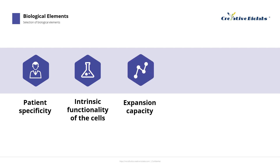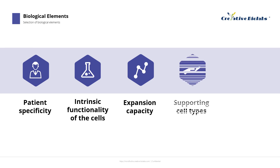Expansion capacity is vital as well, referring to the ability of cells to proliferate in vitro, directly related to the number of cells available for seeding into an OOC device. Supportive cell types also play a crucial role. The stromal environment of a tissue includes supporting cells like fibroblasts, pericytes, and vasculature. These cells significantly contribute to the function of engineered tissues and play an important role in disease progression. Stromal cells in their appropriate microenvironment are critical for reproducing specific tissue functions and physiological responses representative of in vivo conditions.